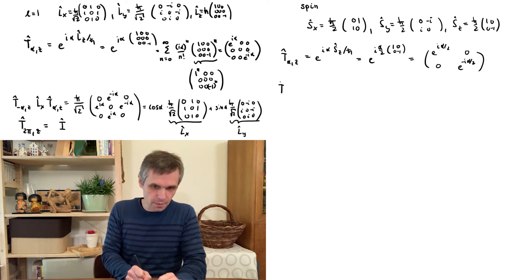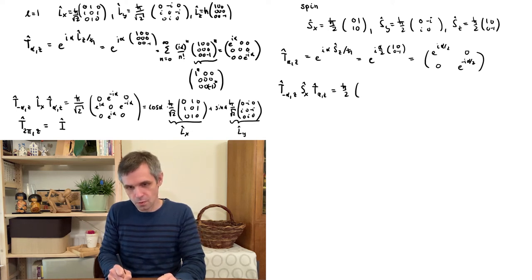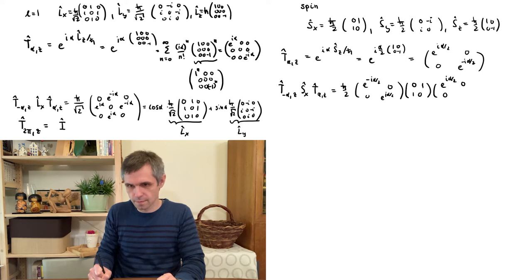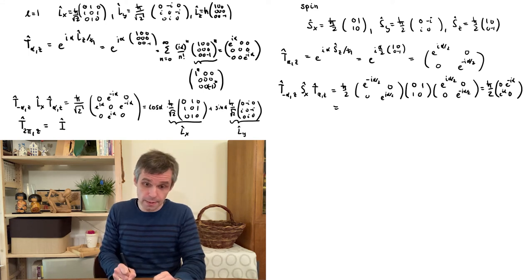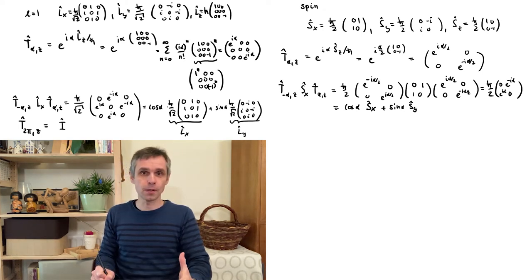Since this is again a diagonal matrix, we can write it down as a two-by-two matrix with the corresponding entries. When we multiply this from both sides onto Sx and perform the multiplication of the two-by-two matrices, and apply the Euler identity, we can rewrite the result as cosine(α)·Sx + sine(α)·Sy.